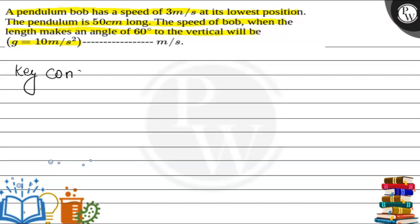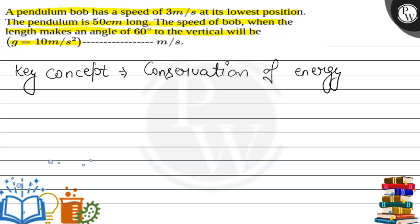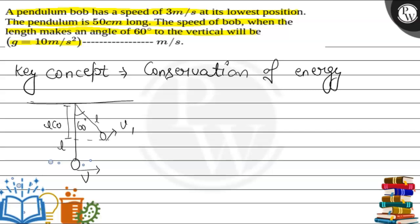The key concept of this question is conservation of energy. Let's draw this picture. Here, this is the pendulum. The length of this pendulum is L, and at its lowest position its speed is V. When it makes an angle of 60 degrees, its speed becomes V1. This is the angle of 60 degrees, and the pendulum has length L. The vertical component becomes L cos θ.